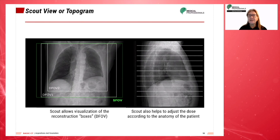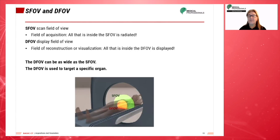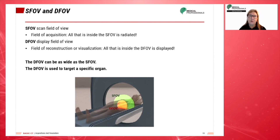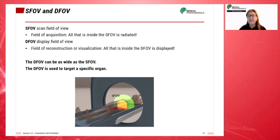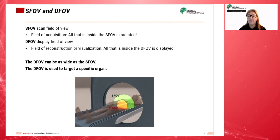The scout view allows the visualization of the displayed field of view, or DFOV, and the adjustment of dose according to the patient's anatomy. The scanned field of view, SFOV, is the diameter of the circular region within the scanned plane over which projection data is collected. It is nominally equal to the diameter of the primary beam in the axial plane. DFOV can be equal to or less than the SFOV, and determines how much of the scanned field of view is reconstructed into an actual image.